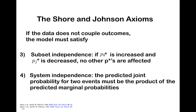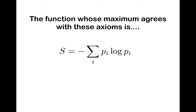This is basically equivalent to saying that if the data does not couple outcomes, the optimal model should not impose structure that is not warranted by the data itself. System independence: the predicted joint probability for two events must be the product of the predicted marginal probabilities, if the data does not couple outcomes. For example, the probability of rolling a 1 and a 2 should simply be the product of the probability of rolling a 1 and rolling a 2 — unless the data gives us reason to believe those outcomes are coupled. If you agree to those four basic axioms, the function whose maximum agrees with them is none other than the Boltzmann-Gibbs entropy, or any function with an identical maximum.